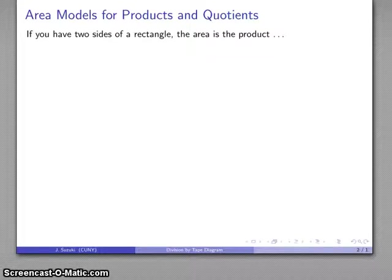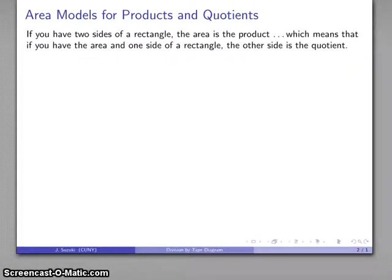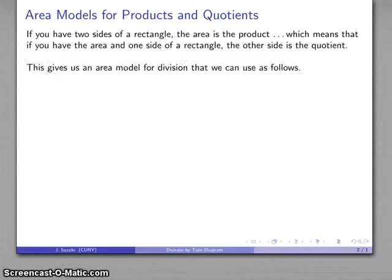Remember, division and multiplication are very closely related. The key here is that if I know the two sides of a rectangle, then the product corresponds to the area. But if I have the area and one side, the other side is going to correspond to a quotient, and this allows us to produce an area model for division.